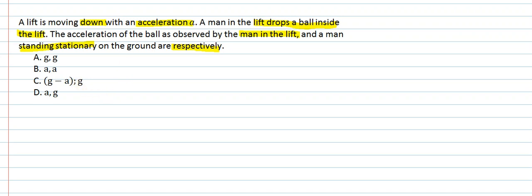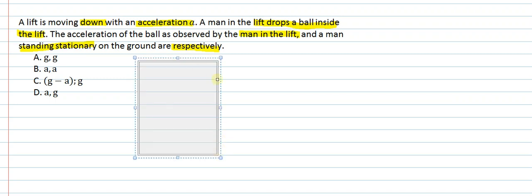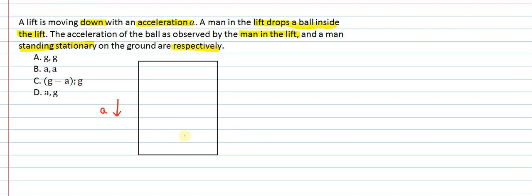Let's draw this condition. This is the lift and it is going downwards with an acceleration 'a'. There is one observer standing inside the lift, and there is one observer viewing this scenario from outside the lift.